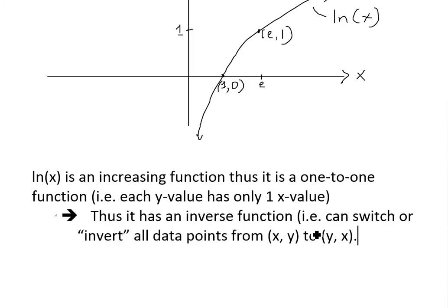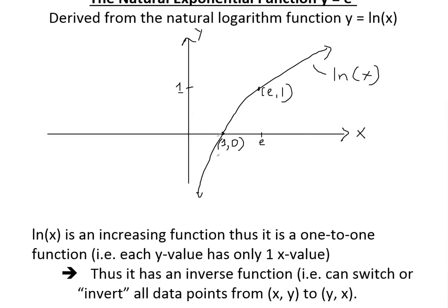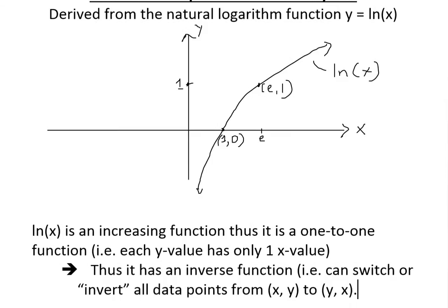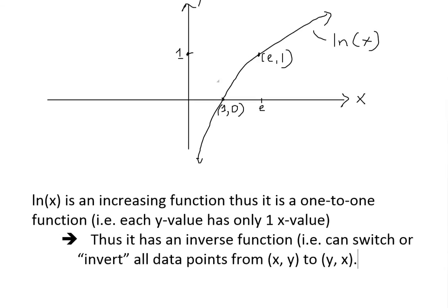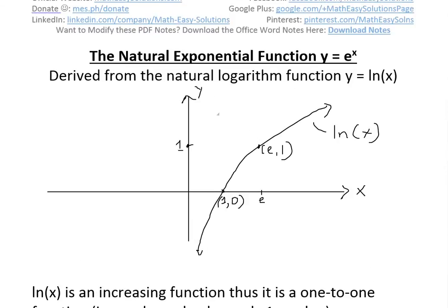Since ln of x is one-to-one, it has an inverse function. Like I showed in my earlier video, this inverse function means you can switch or invert all the data points from (x, y) to (y, x). For example, the point (1, 0) inverts to (0, 1). And if a function has an inverse, you can reflect it off the y equals x line.